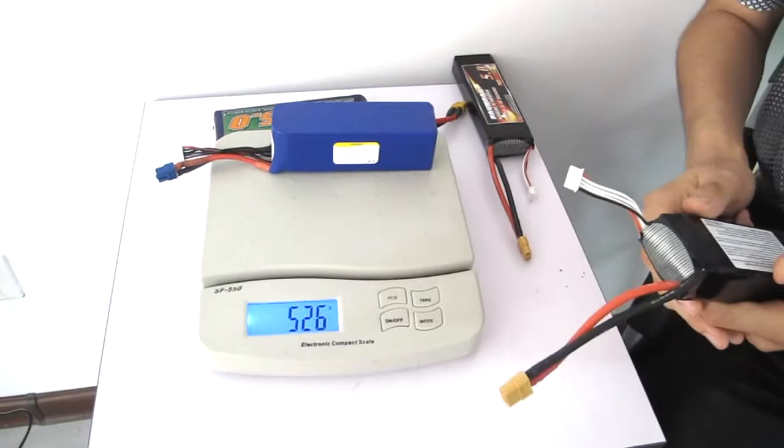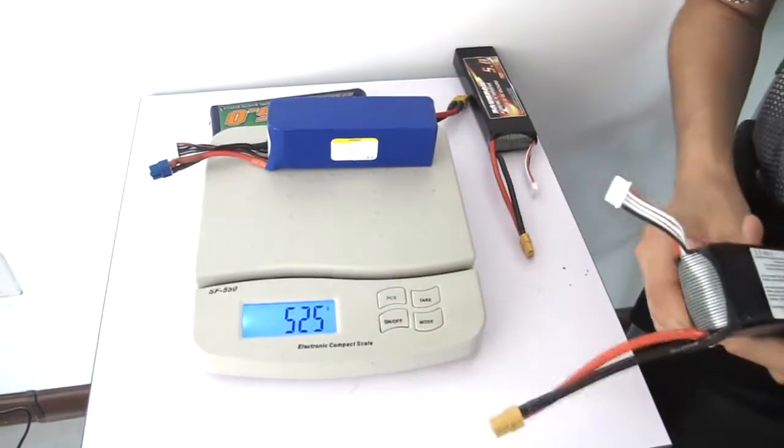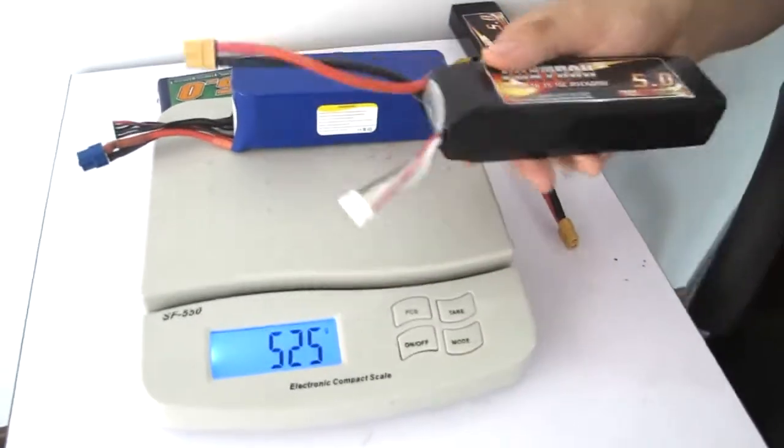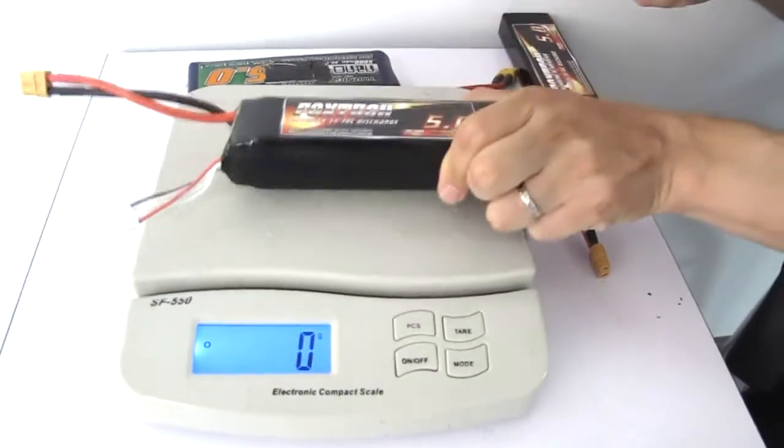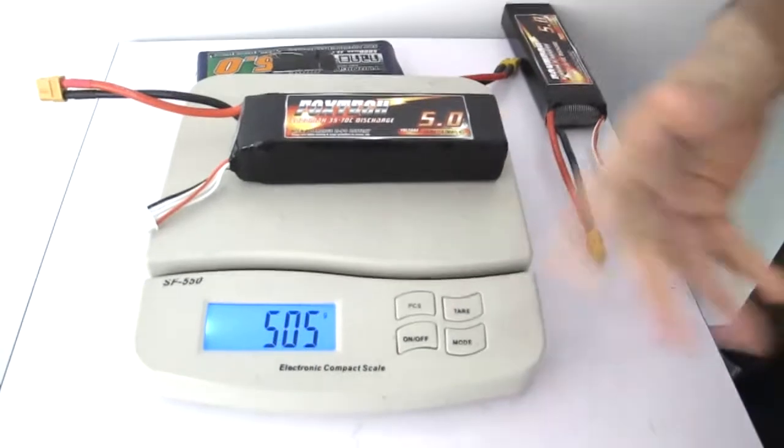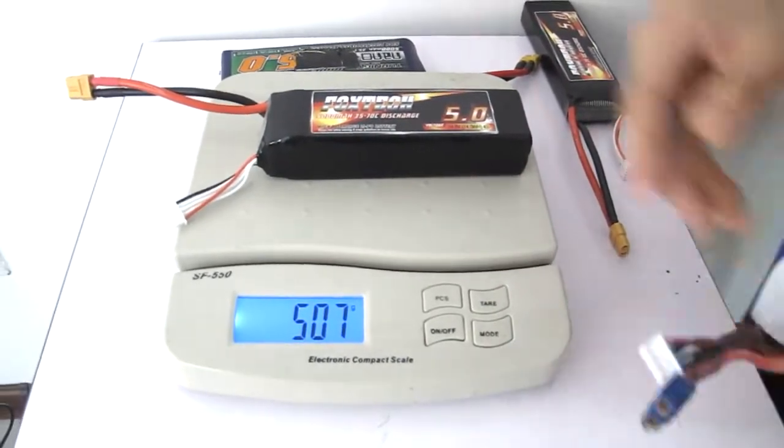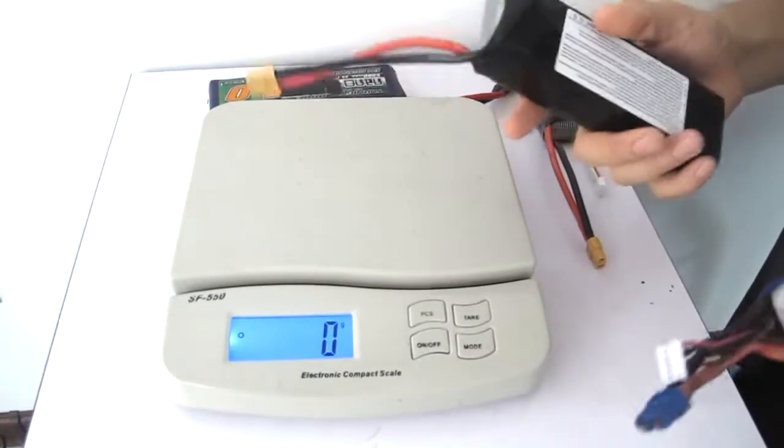Okay, so 525 grams. And with the same capacity, the FOXTECH battery weighs 507 grams. That means almost 20 grams lighter.